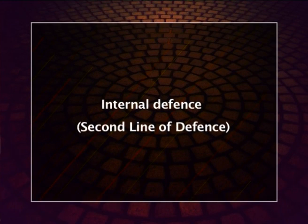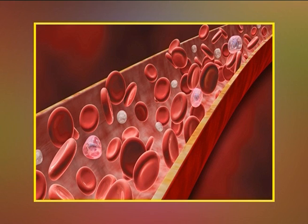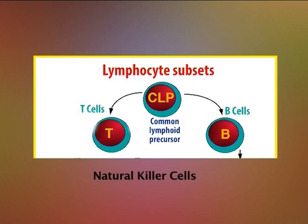The second line of defense, or internal defense, consists of widely distributed cells, tissues, and organs that recognize and destroy foreign materials. These cells arise from pluripotent stem cells in the bone marrow, which divide into two lineages. Lymphoid stem cells give rise to B cells, T cells, and natural killer cells. Common myeloid progenitor cells give rise to granulocytes, monocytes that give rise to macrophages, dendritic cells, megakaryocytes that produce platelets, and erythroblasts that produce RBCs. Activation of innate responses produces signals that direct subsequent adaptive immune responses.